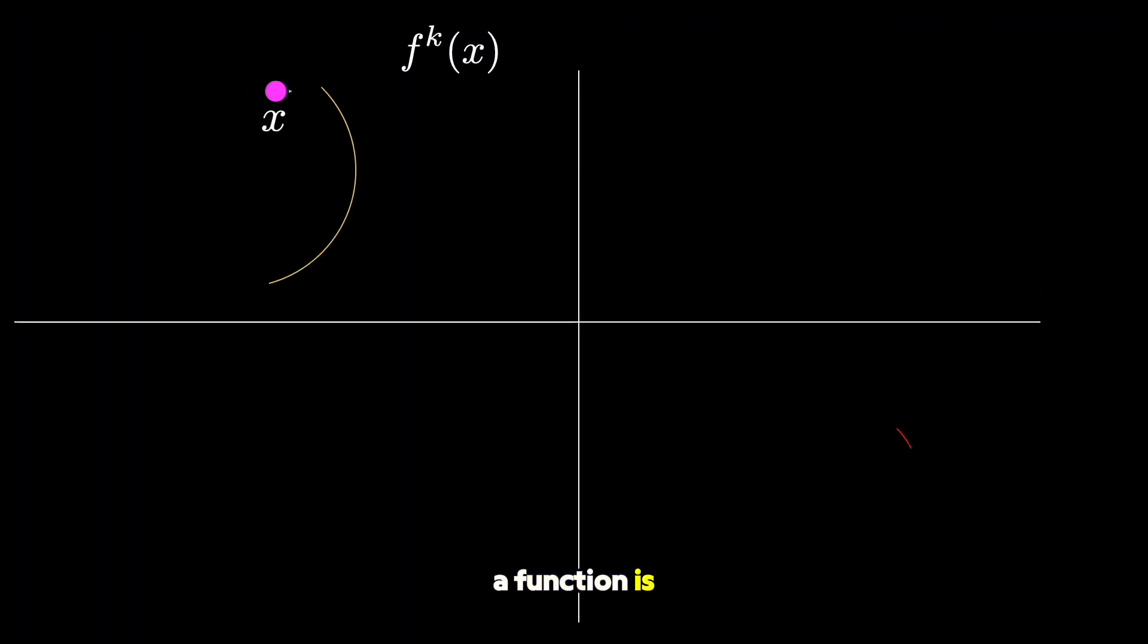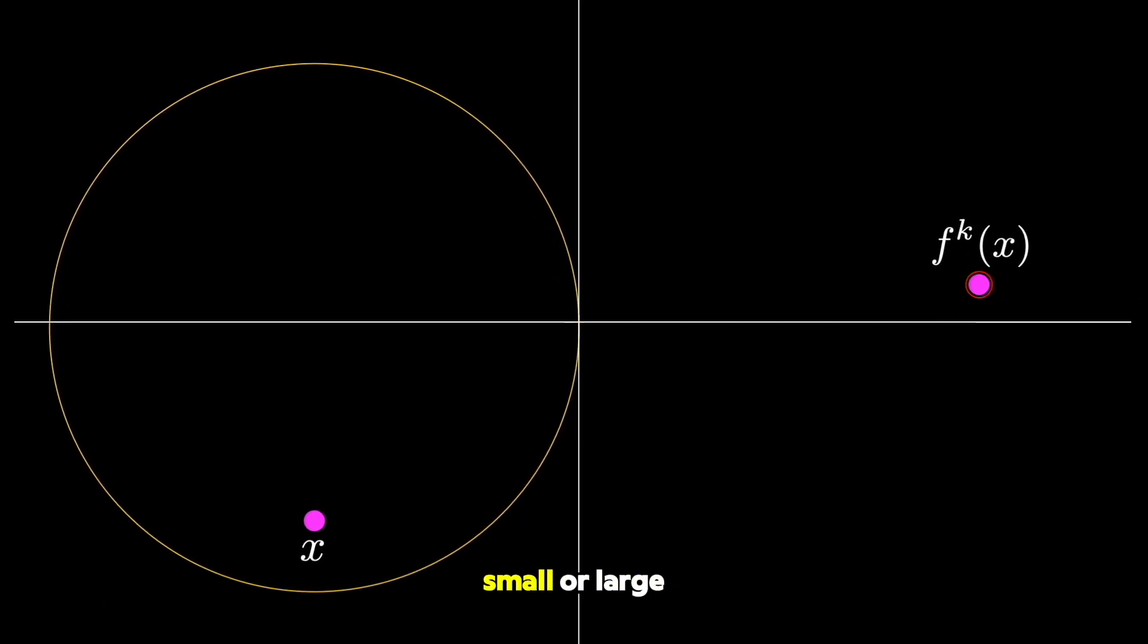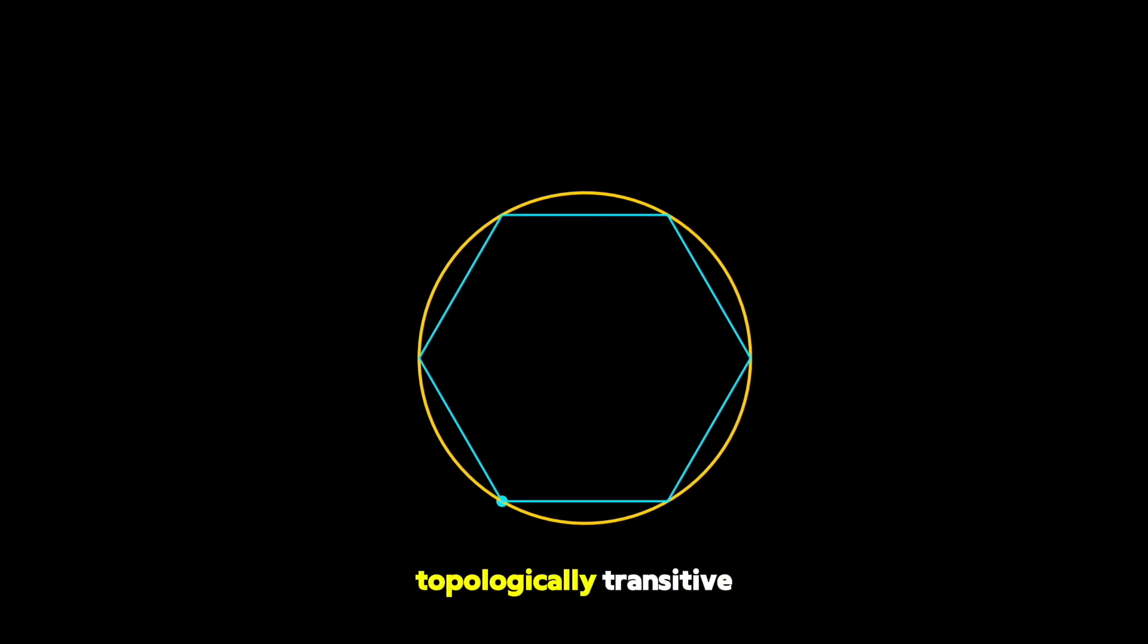We say that a function is topologically transitive if for any two neighborhoods you select, you can always find at least one point in one neighborhood and some integer k such that if you apply the function k times to the point, you will eventually end up inside of the other neighborhood. And this occurs no matter how small or large each neighborhood is. So an example of a function that is not topologically transitive is the map that rotates a point on the circle by an angle that is a rational number. Eventually, you will keep repeating the cycle and there are clearly many regions of the circle that you would never hit.